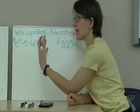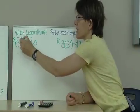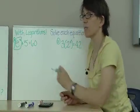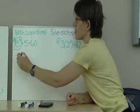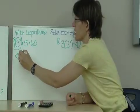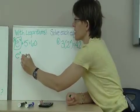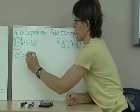So the first thing I'm going to do is isolate this exponential expression. I'll subtract 5 from each side, and that will give me e to the x equals 55.